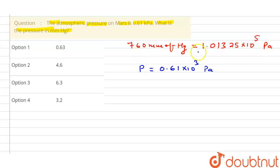From pascal to mm of Hg means we have to divide this value. So 0.61 times 10 to the power 3, we have to multiply by 760 and we have to divide by this value that is 1.013 into 10 to the power 5. That much mm of Hg will be there.